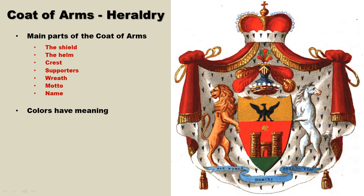The colors also have meaning. There are four primary colors: red, white, gold, and green. Red usually represents the military, but it can also represent a martyr. Gold represents generosity, usually. White usually represents peace. Green usually represents love or joy.